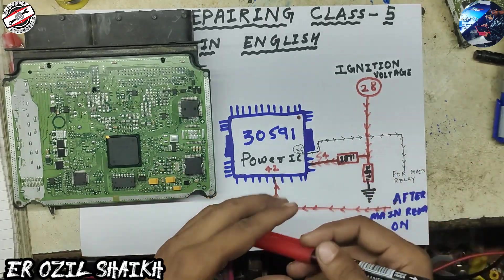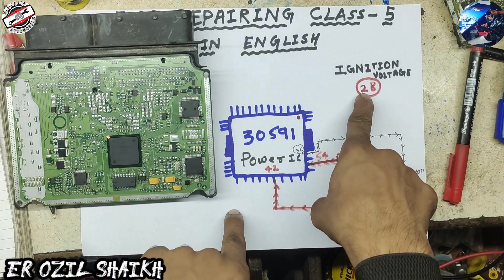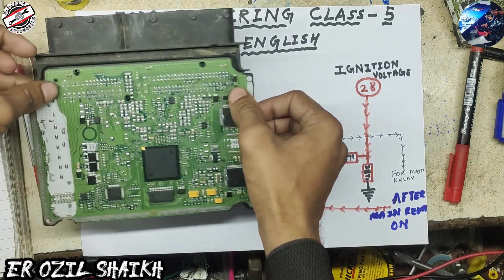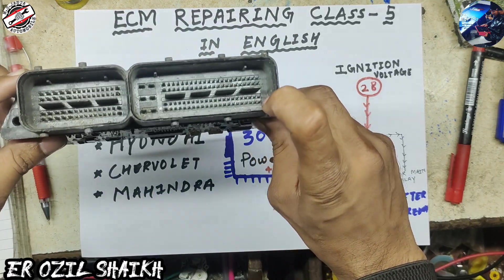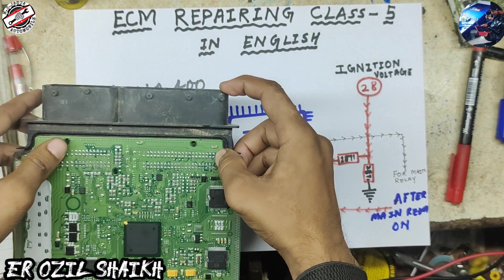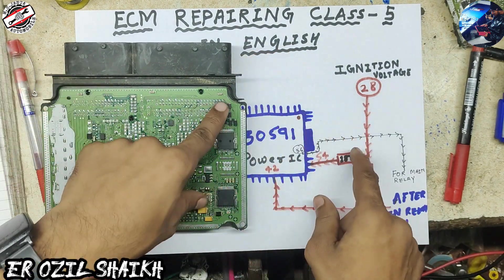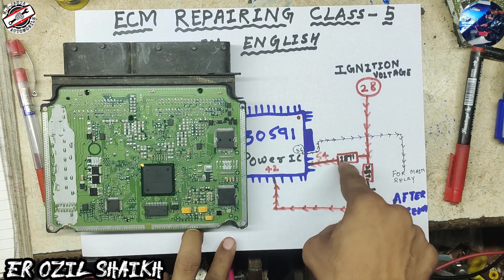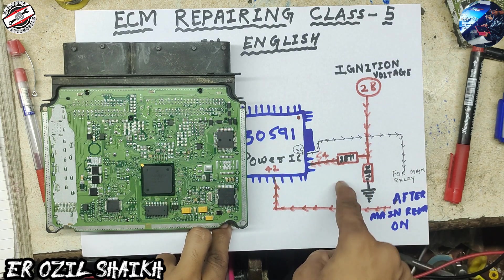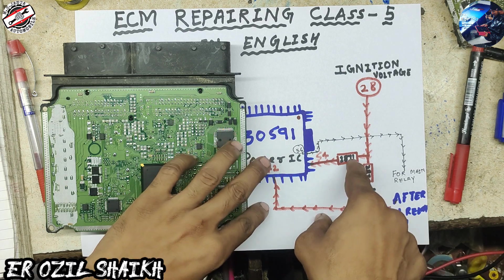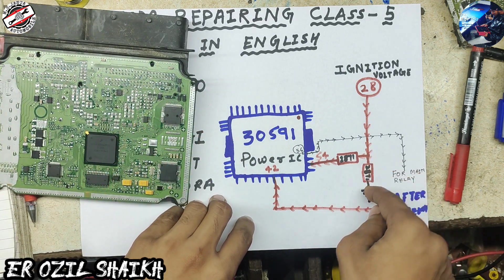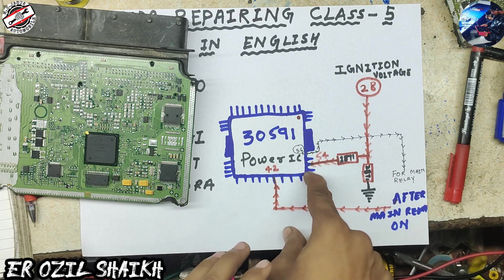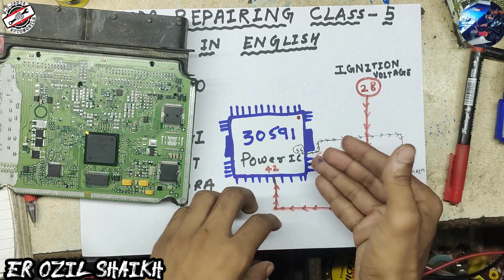We have ECM pin number 28. Pin number 28 is the ignition input. This ignition comes through a resistance — resistance number 2871. This resistance has one side going to ground and the other side going to IC pin number 54.